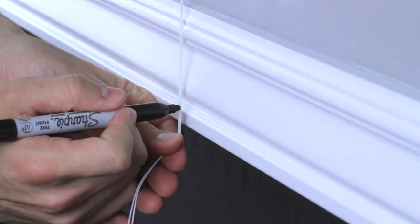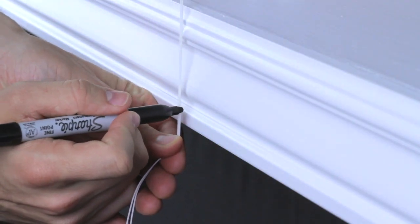With the shade all the way up, make a mark approximately 2 inches below where your shade should stop when it's lowered.